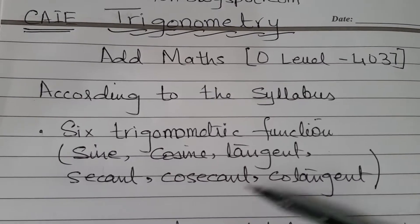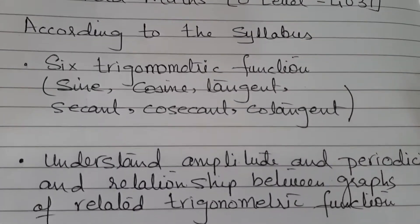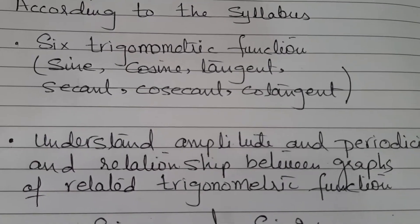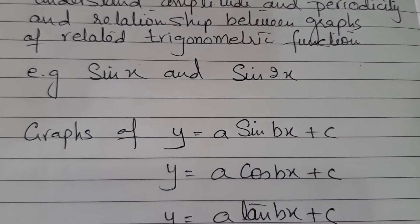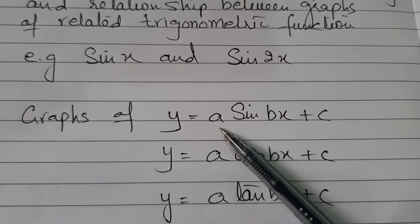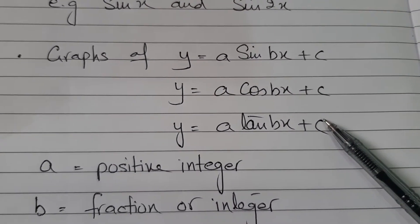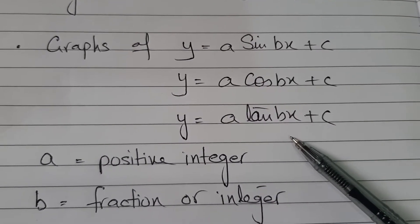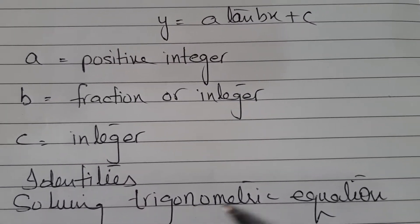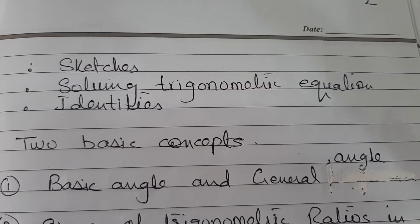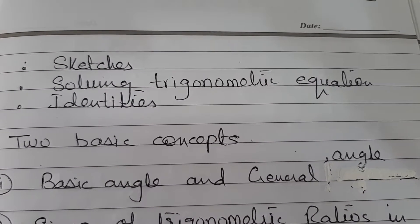According to the syllabus you need to understand six trigonometric functions: sine, cos, tan, sec, cosec and cot. After that you need to understand amplitude and period and the relationship between the graphs of related trigonometric functions. You will see the graph where A is any integer, B could be an integer or fraction, and C is again an integer. According to the syllabus you also need to know identities and how to solve trigonometric equations. So in this topic you basically need to know three things: the sketch, how to solve equations, and how to handle identities.